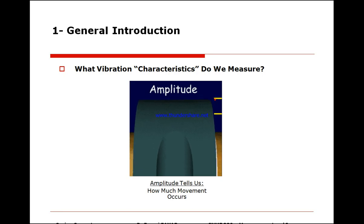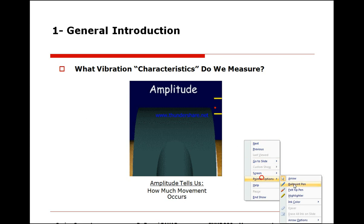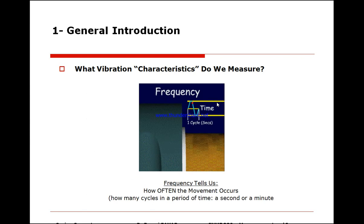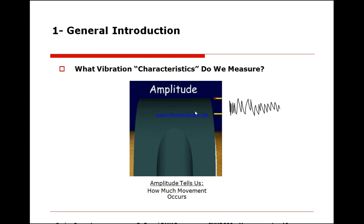What vibration characteristic do we measure? First we have the amplitude. Amplitude literally is how much movement is occurring. Then we have frequency, which is how often this is happening. I need to remind you about one thing: vibration does occur all the time and it's extremely normal.